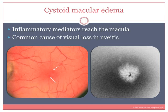Cystoid macular edema is a common complication of all types of uveitis — anterior, intermediate, or posterior. Inflammatory mediators reach the macula and cause cystoid structural changes in the foveal area, causing loss of vision. The photo on the right is a fundus fluorescein angiogram of the foveal area showing the characteristic petaloid appearance seen due to leakage in cystoid macular edema.